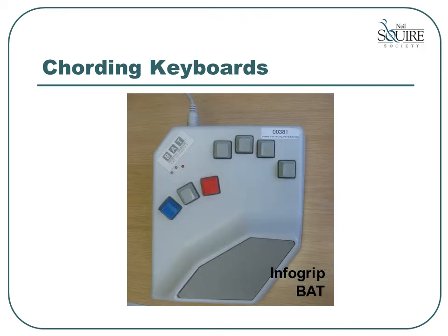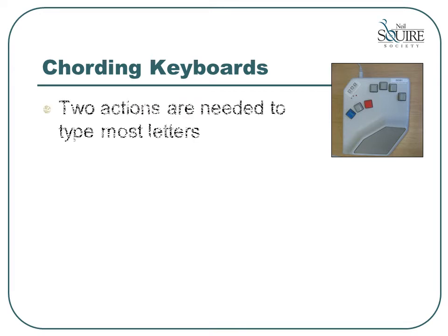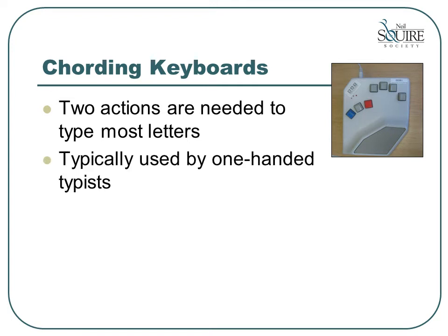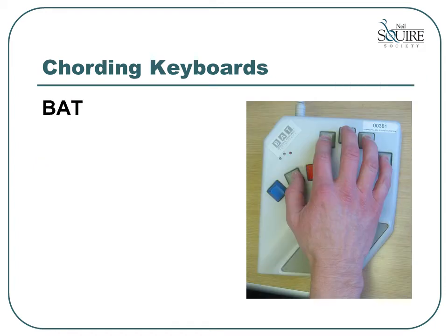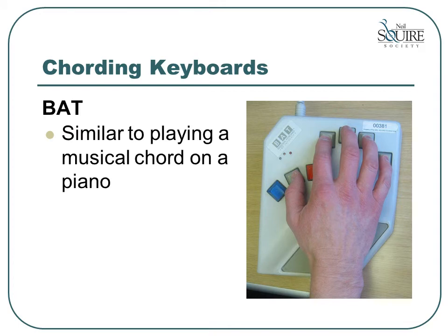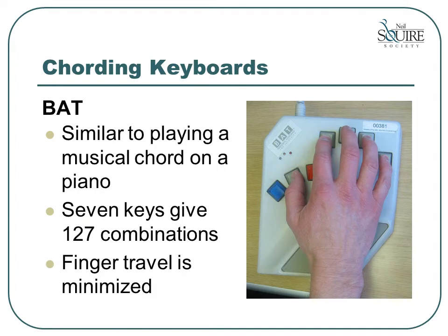Another specialized type of keyboard is the cording keyboard. This category describes keyboards where two actions are required in order to type most of the letters. The keyboard shown in the picture is called the BAT, and is typically used by one-handed typists. Each of the cording keyboards requires very different cording techniques, and training is required. Typing on the BAT keyboard is similar to playing a musical chord on a piano. There are only seven keys on this device; however, using cording techniques, you can type all of the keystrokes on a standard keyboard. An advantage of this keyboard is that finger travel is minimized.